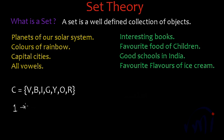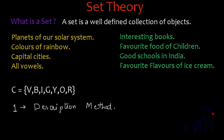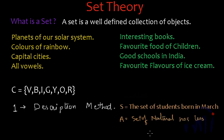The first method is the description method. In this method we define the set in proper words. Suppose I want to write a set of students who are born in March — I can write: S = the set of students born in March. And if I want to write a set of natural numbers which are less than 20, I can write: A = set of natural numbers less than 20. This is the description method of representing a set.